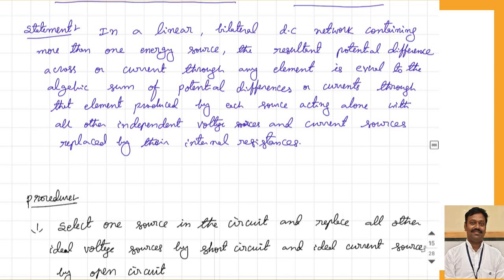The statement of the superposition theorem is: in a linear bilateral DC network containing more than one energy source, the resultant potential difference across or the current through any element is equal to the algebraic sum of the potential differences or currents through that element produced by each source acting alone, with all other independent sources replaced by their internal resistances. So we take one source at a time, replace all remaining sources by their internal resistances, find the response at a particular branch, and then sum all individual responses.